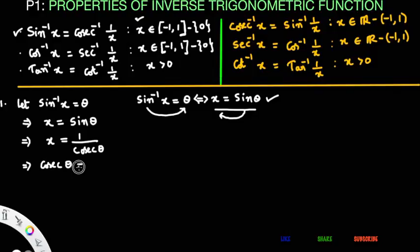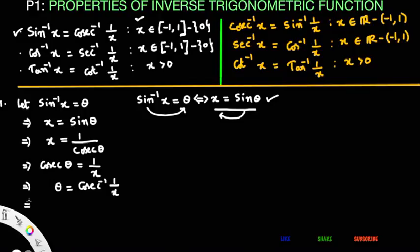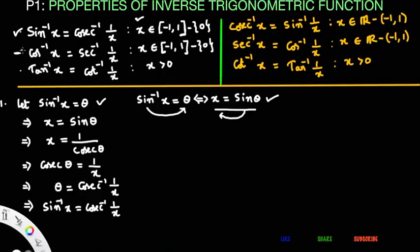From x = sinθ = 1/cscθ, we get cscθ = 1/x. From the definition of the inverse cosecant function, θ = csc⁻¹(1/x). Since we let sin⁻¹x = θ in the first step, substituting back gives sin⁻¹x = csc⁻¹(1/x). So we have proved the first result. Similarly, you can prove cos⁻¹x = sec⁻¹(1/x), which holds when x > 0.